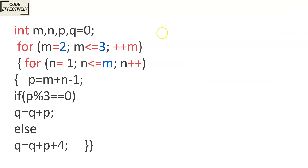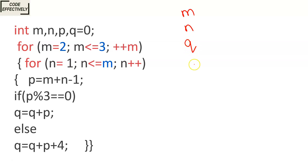In this, I am giving this code and we have to find what will be the output, or what will be the final value of Q. We have to estimate the final value of Q. We are given variables M, N, P, Q. Initially, Q is 0.